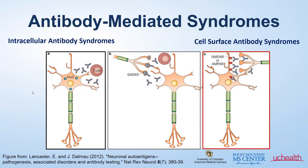In panel A, in the black box, this shows an intracellular antibody target — for example, anti-HU. These antibody syndromes are classically thought to be paraneoplastic syndromes, often related to an underlying cancer. It is thought that they largely represent a T-cell-mediated process and are often harder to treat with immune-suppressing medications.